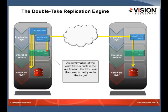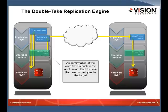We packetize that replicated op and ship it off to the target server, making that exact same write in the exact same location using the exact same data. The original op returns to the end user or application that initiated it — we don't interrupt that flow. This is asynchronous replication, so we're not waiting for the replication op to be written on the target server; we allow normal productivity to continue.